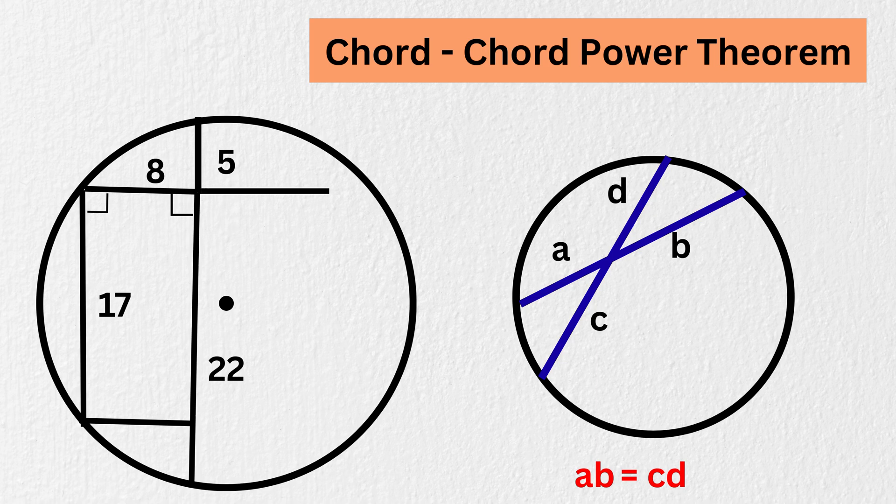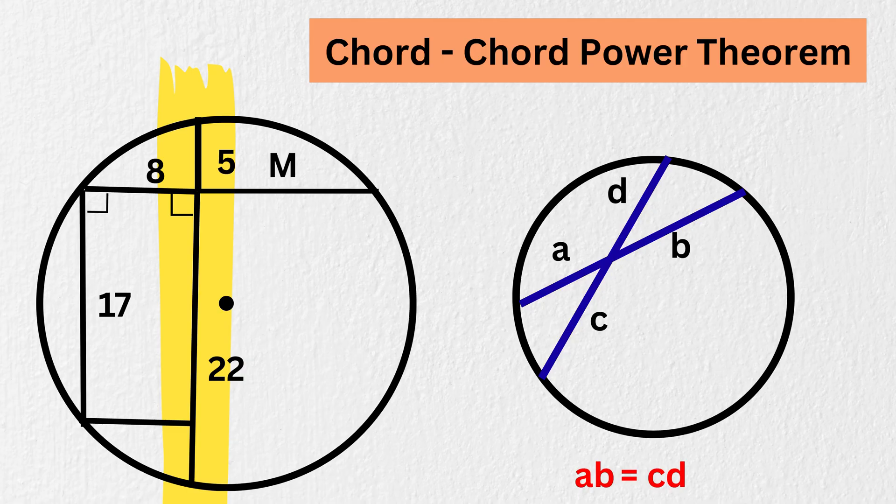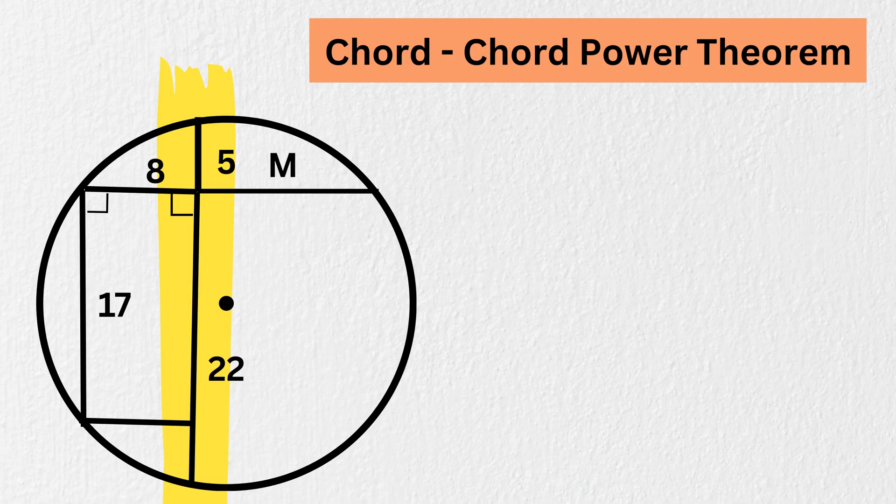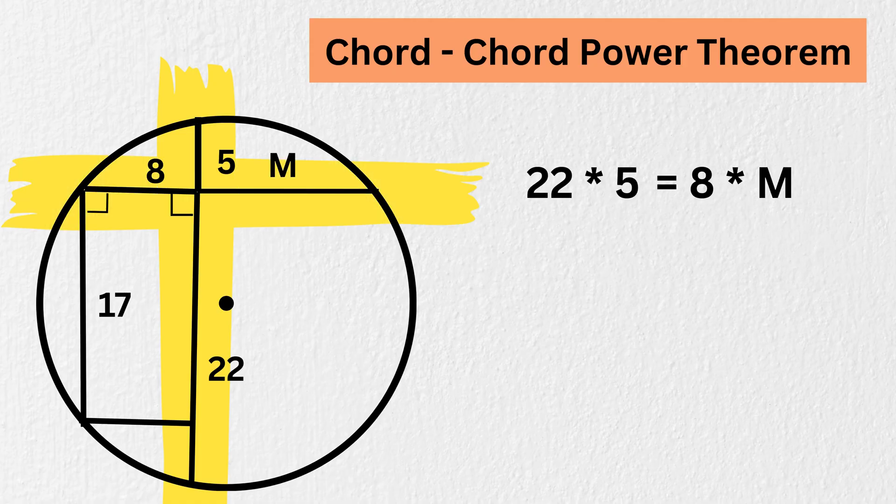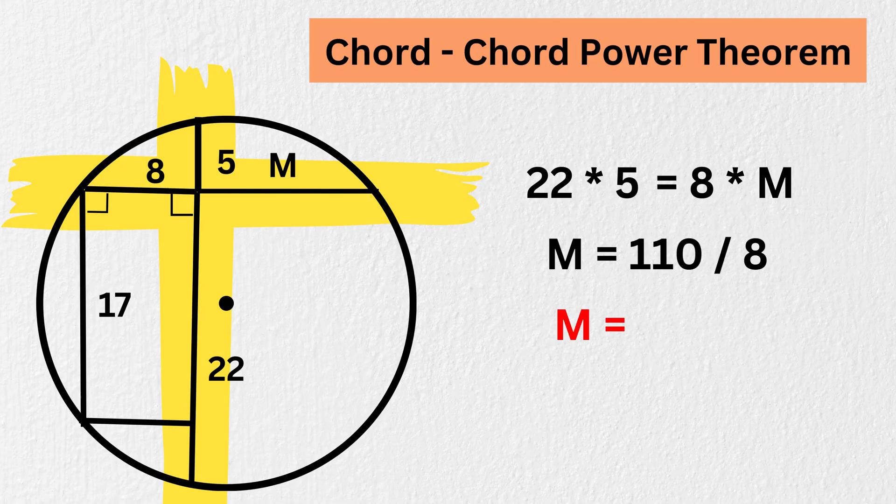Now, let us draw a line like this. What will be the length of this piece of the chord? Label it as M. Look at these four parts of the chord. We can simply use the chord-chord power theorem here to get this times this, or 22 times 5 equals 8 times M, therefore we get M equals 110 over 8, or 13.75 units.